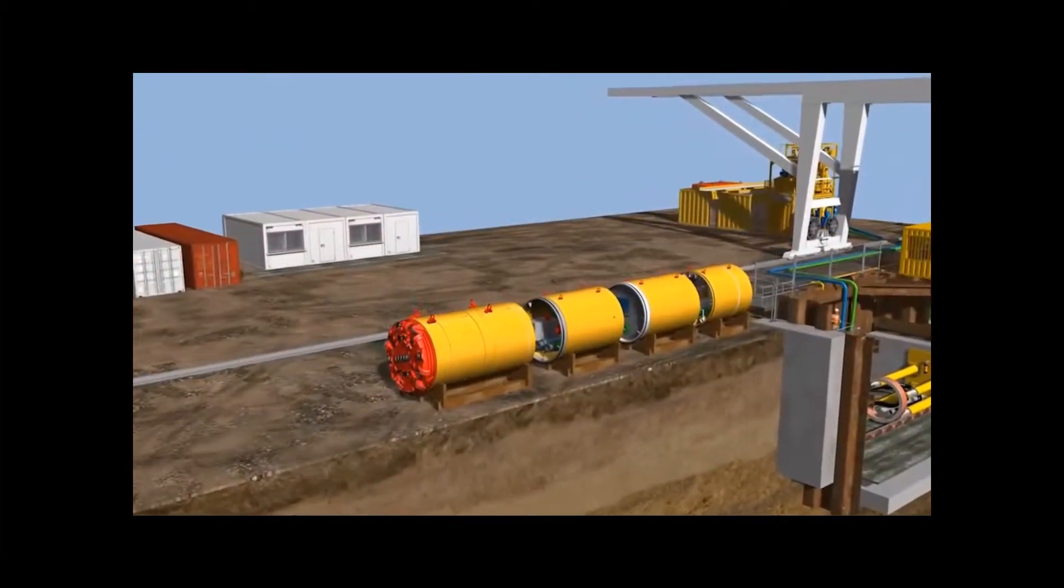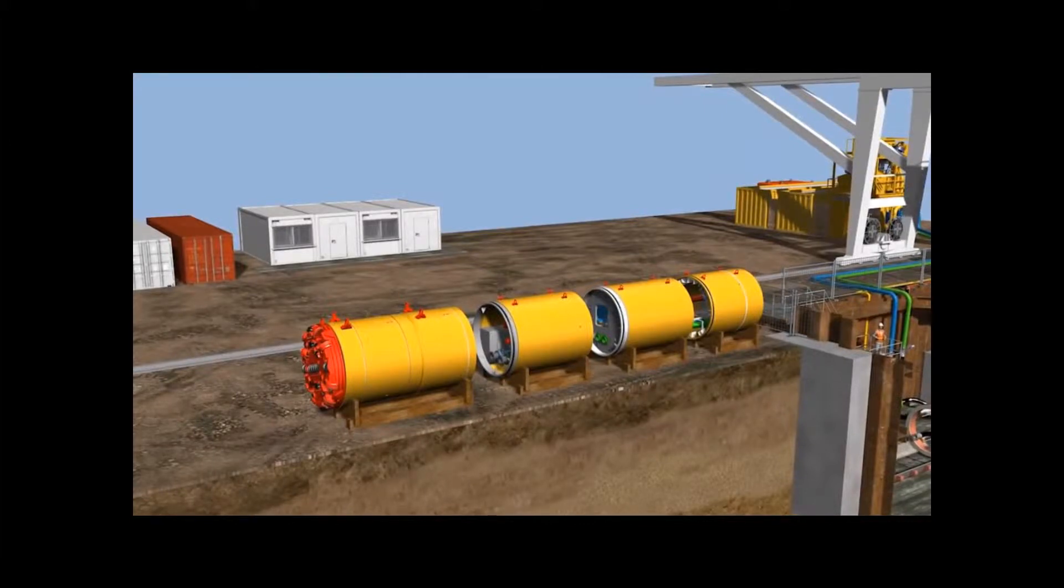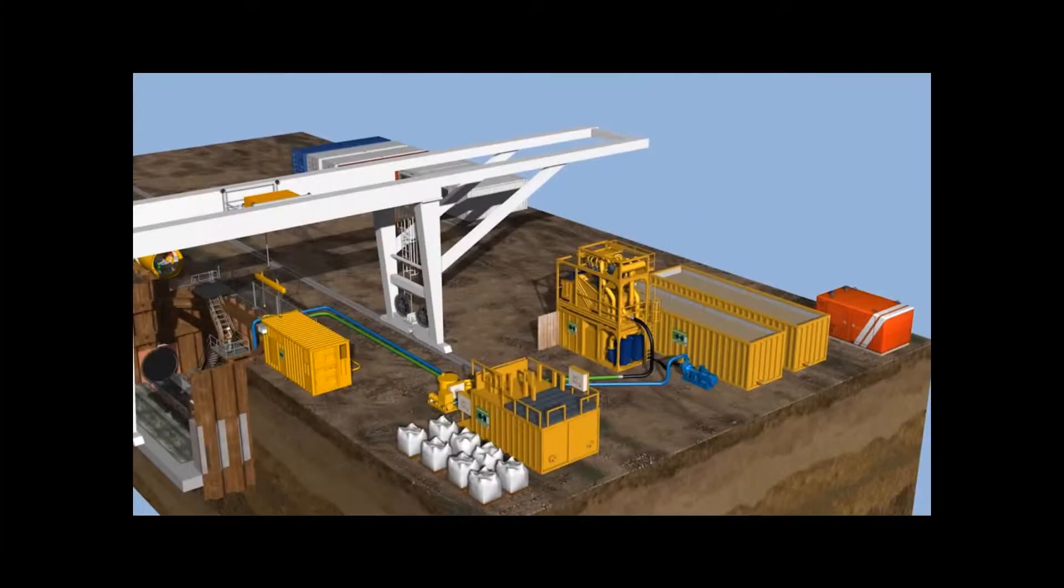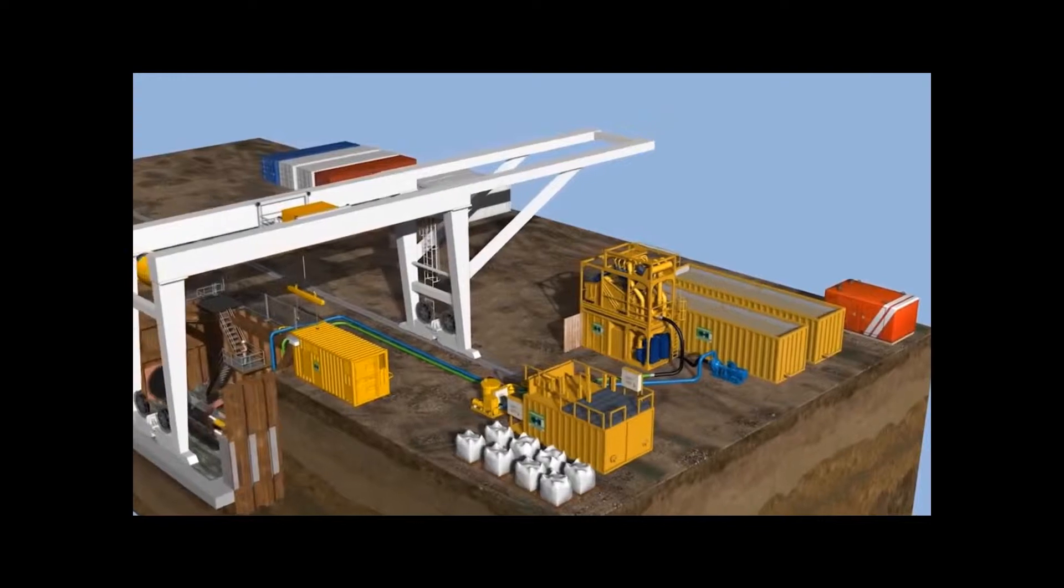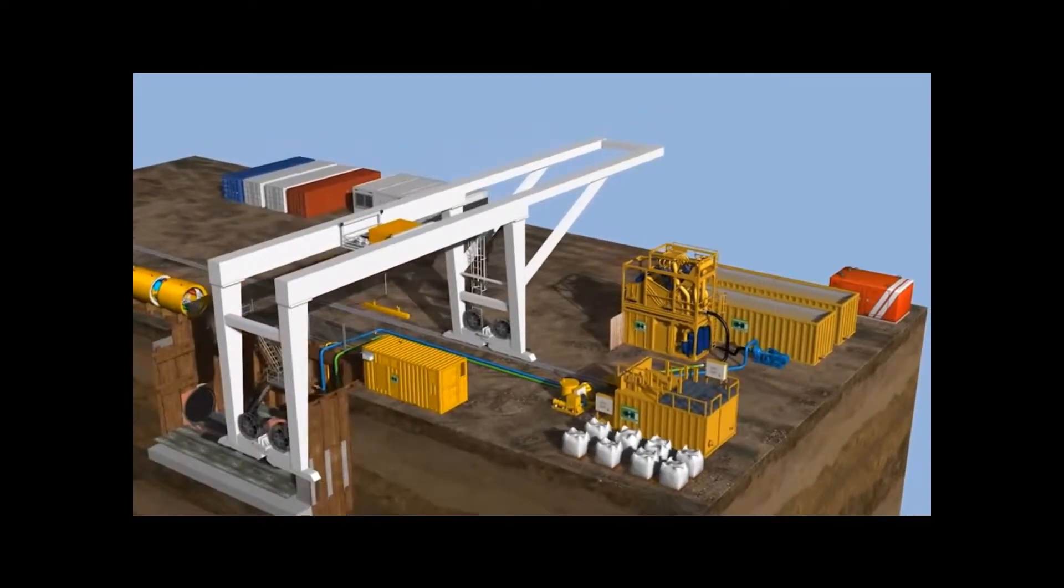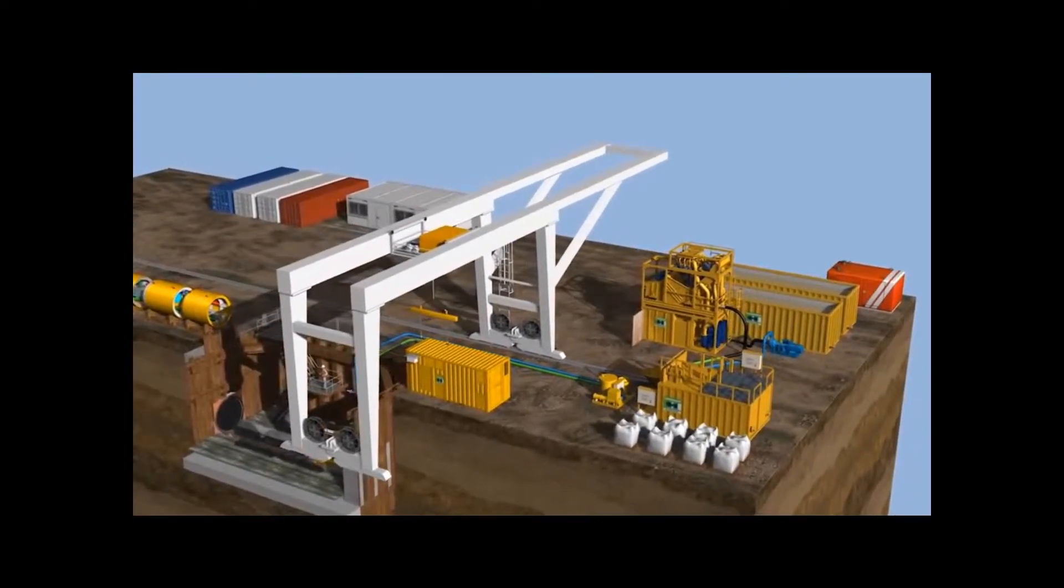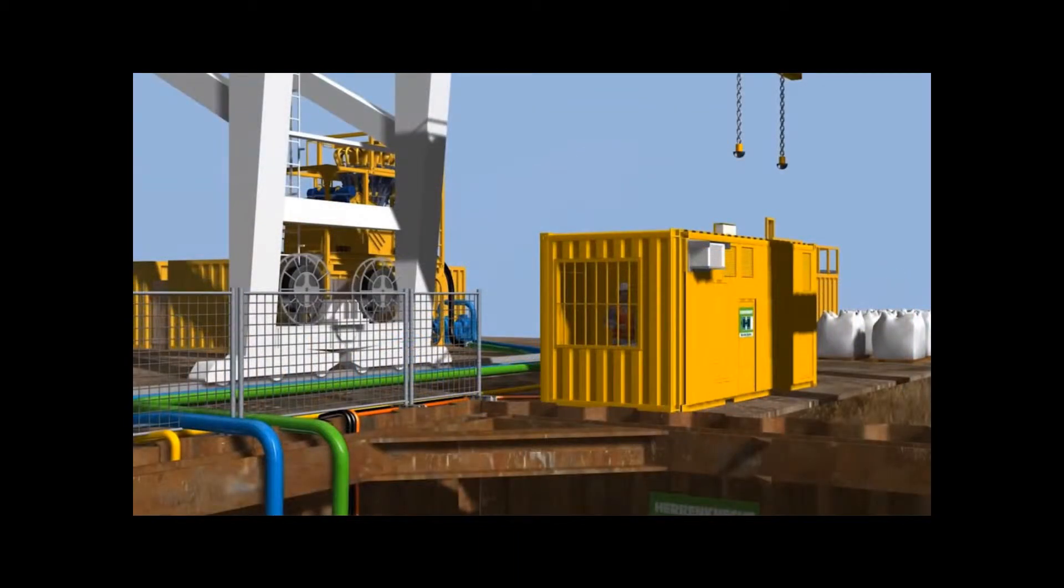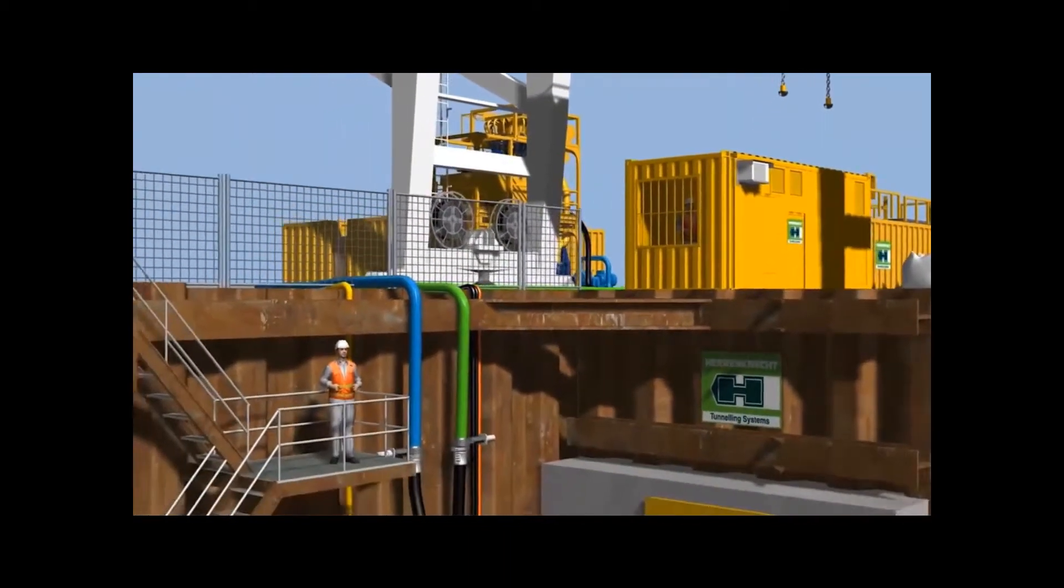The TBM is delivered on site in modules. The container with the control cabin, electrical equipment, and hydraulic power unit for the jacking station is positioned next to the launch shaft so that the machine operator can see the jacking station.